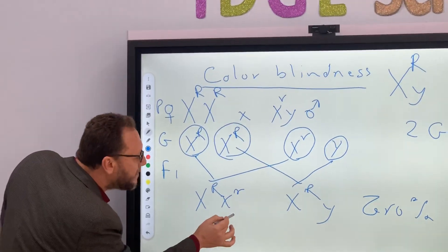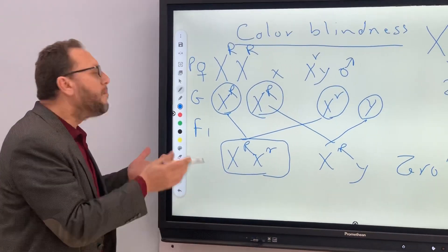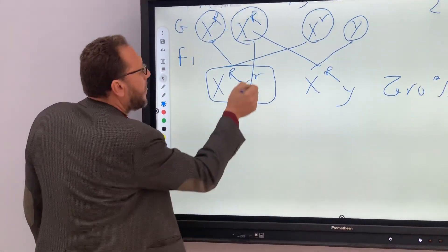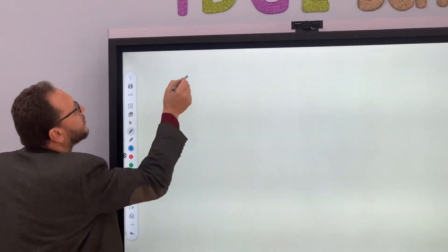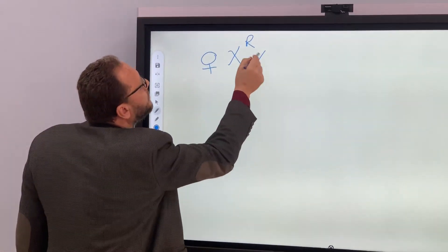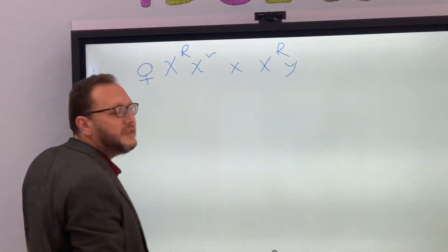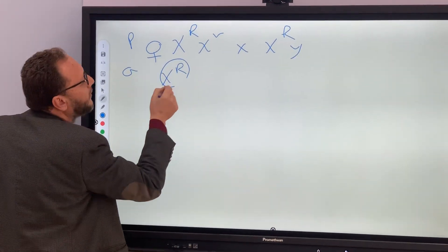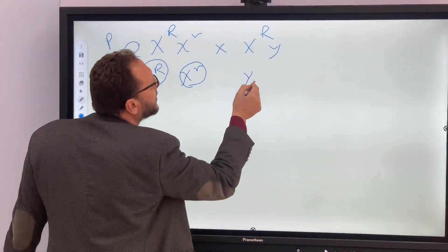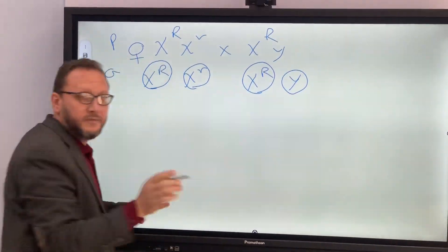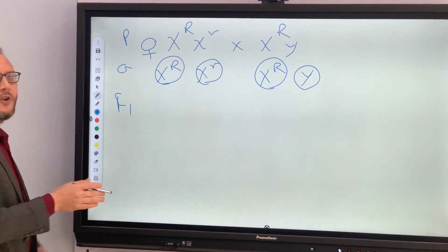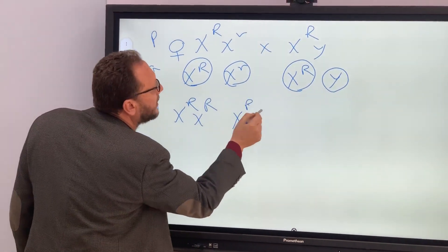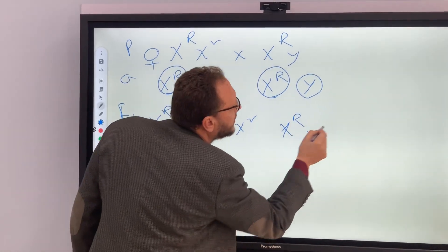What happens if this female, produced from this crossing — who is hybrid — marries a normal male? Due to this, the hybrid female will produce two types of ova: X^R and X^r. And this male, as usual, produces two types of gametes: X and Y. This crossing will provide us with the following possibilities: X^R X^R, X^R X^r, X^R Y, and X^r Y.